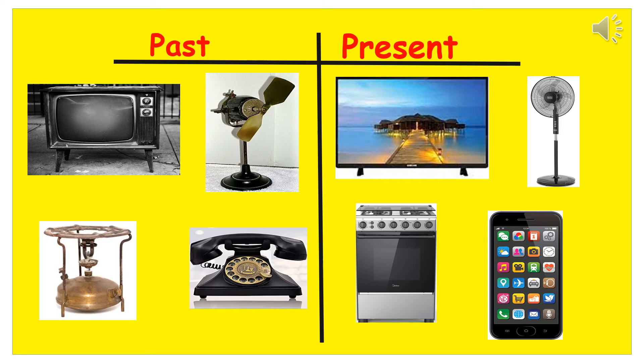The gas cooker of the past was small and had only one burner, but the gas cooker of the present is bigger with more burners and has an oven for baking. The phone of the past was kept in a place and had no camera, but the mobile phone of the present has a camera. We can play music with it and take it anywhere we choose.